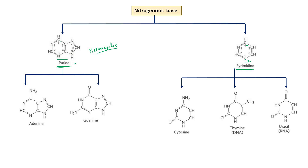The numbering of purine and pyrimidine rings is very important for nomenclature. In purine, the six-membered ring is numbered starting from nitrogen as position 1, going anticlockwise. The five-membered ring then continues the numbering. The nitrogens in purine are at positions 1, 3, 7, and 9.